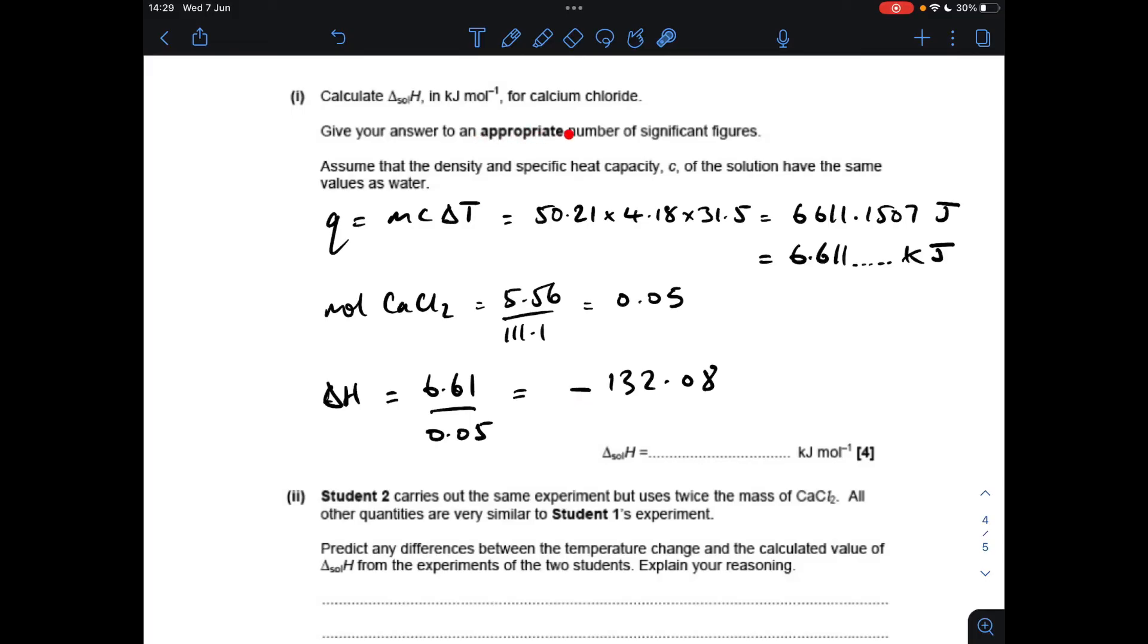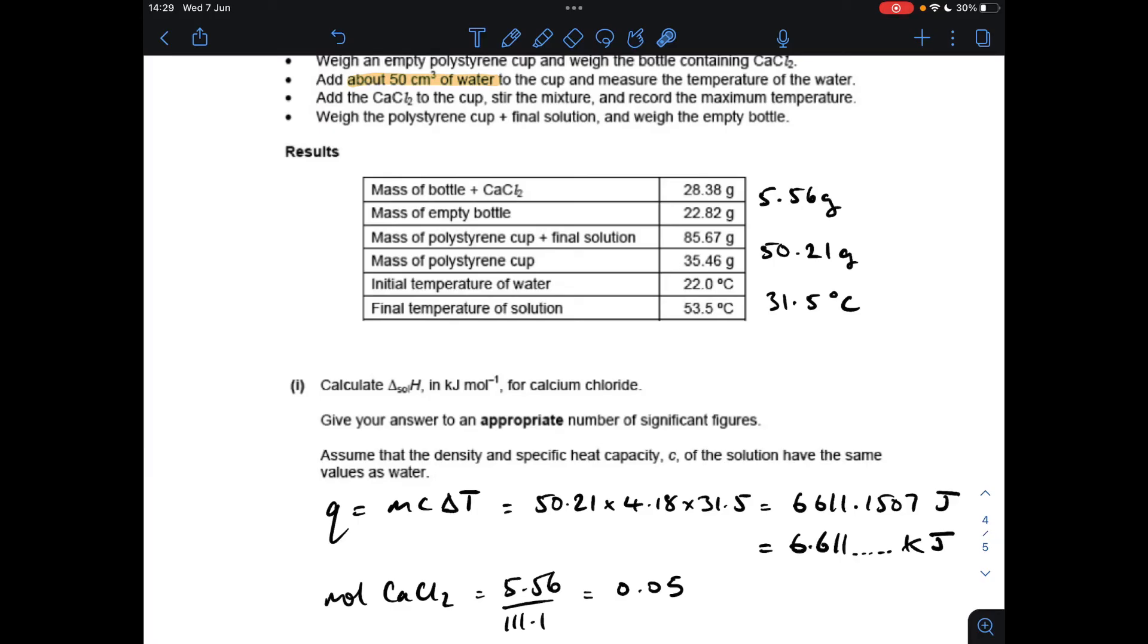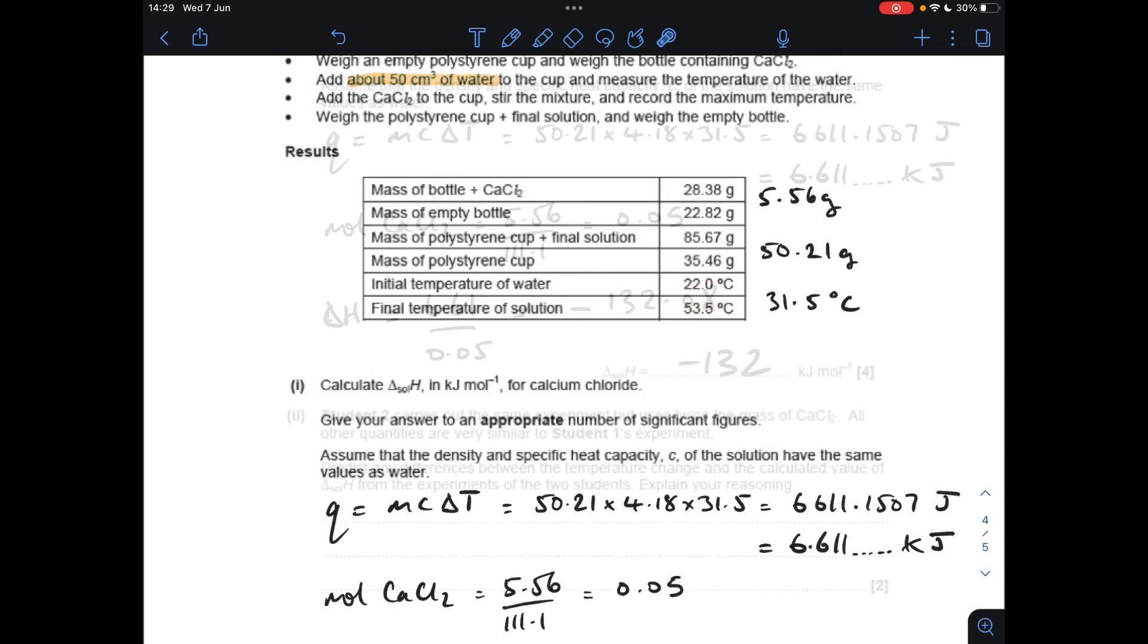And we now just need to put it into an appropriate number of significant figures, which for this question would be three. So it's -132 kilojoules per mole. And the reason it needs to be three significant figures is because you've got to go on the data that's the least accurate. So if you look at all these numbers here, we've got four significant figures, but then we've got three for the temperature, so that's why three is appropriate.